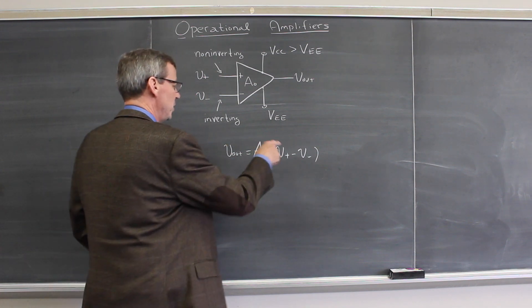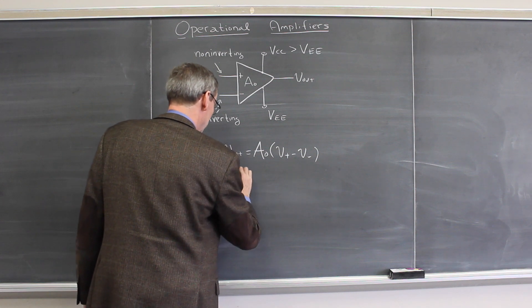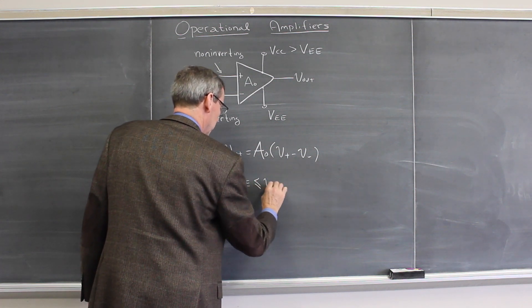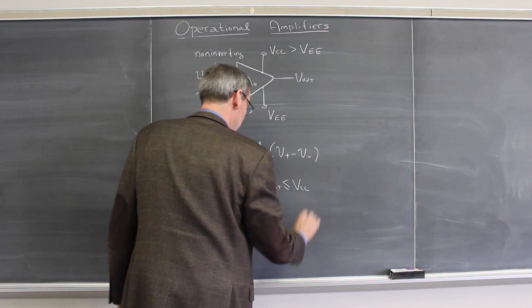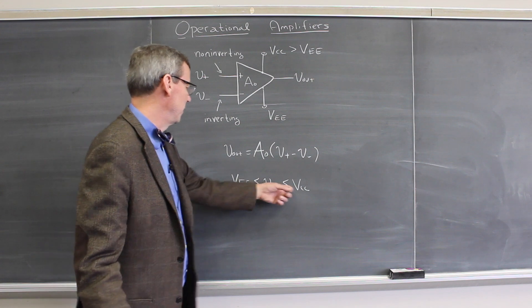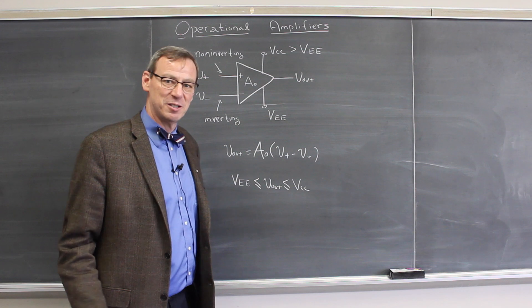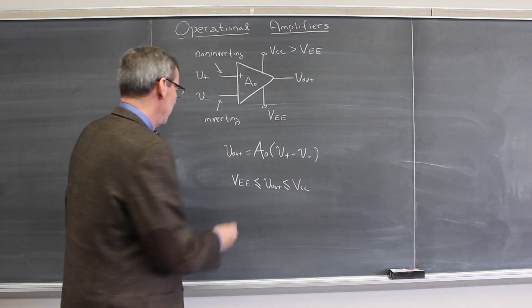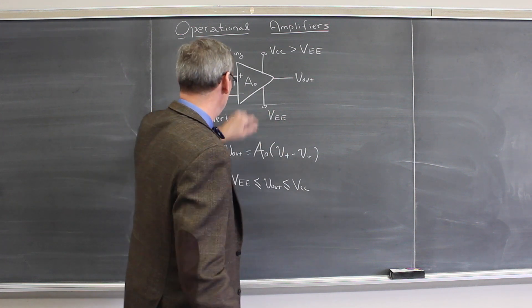But there's a constraint here. The voltage cannot get bigger than VCC or smaller than VEE. So VEE is less than or equal to Vout, which is less than or equal to VCC. If Vout tries to get bigger than those things, it basically gets stuck at those values, and we say it's driven to the rails, just like that driving example we talked about a couple videos ago. Otherwise, the output voltage is the open loop gain times the difference of the two inputs.